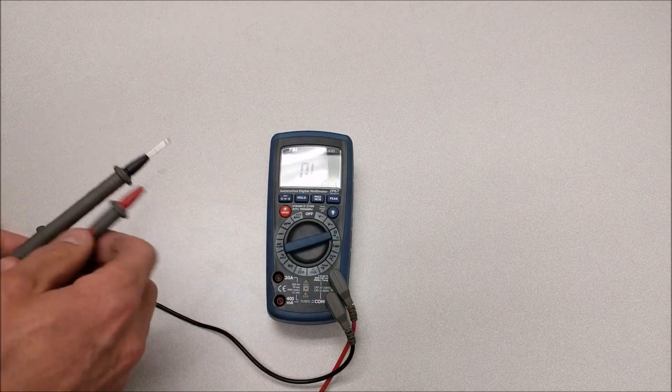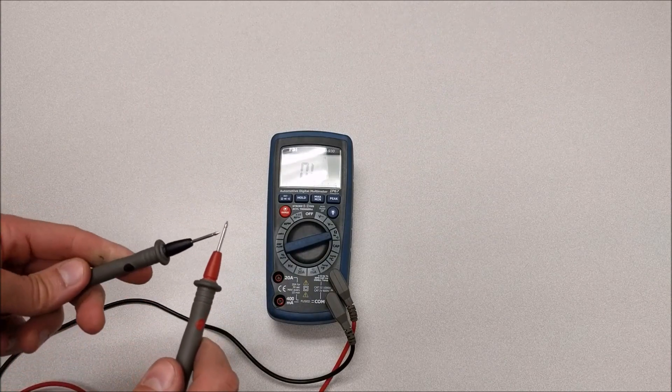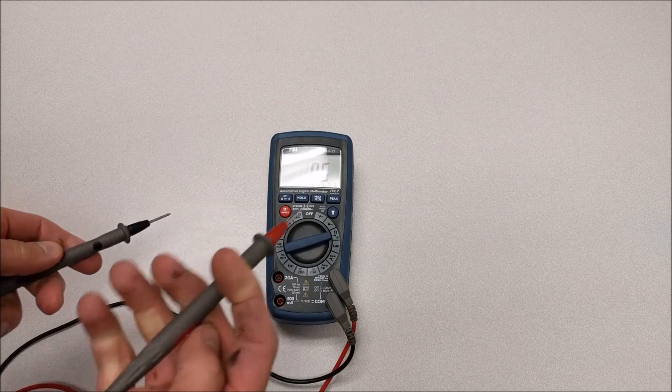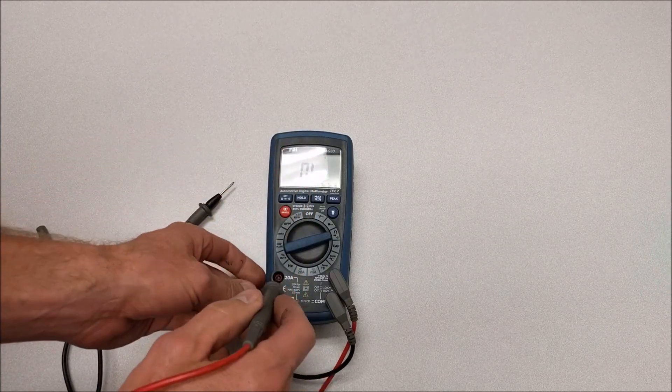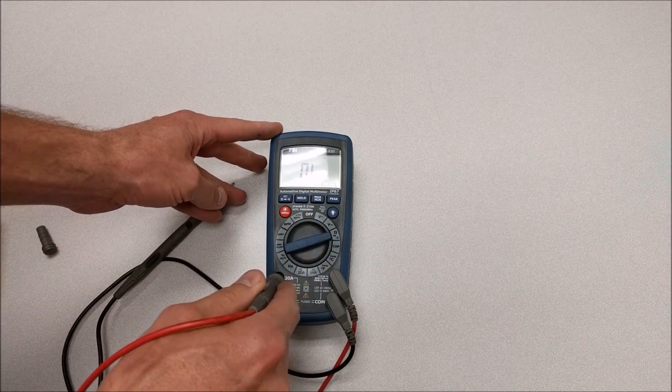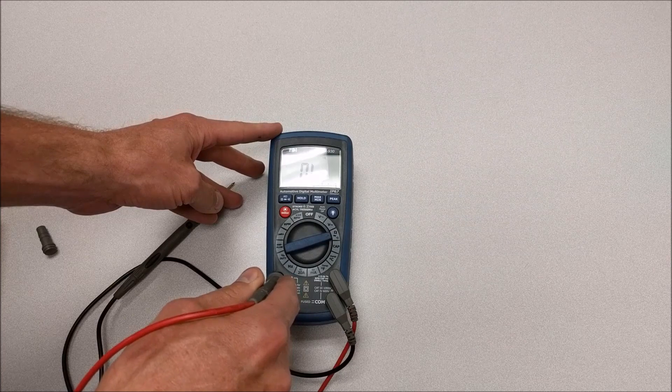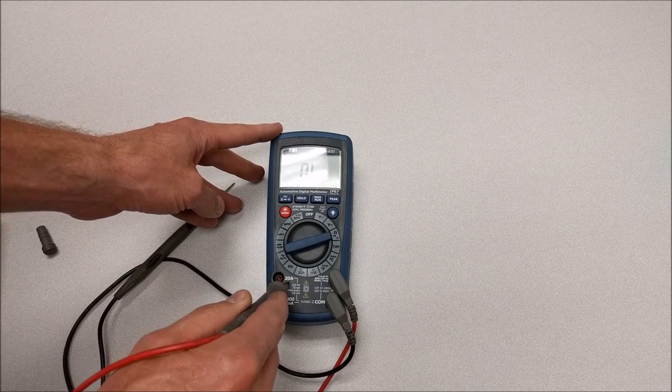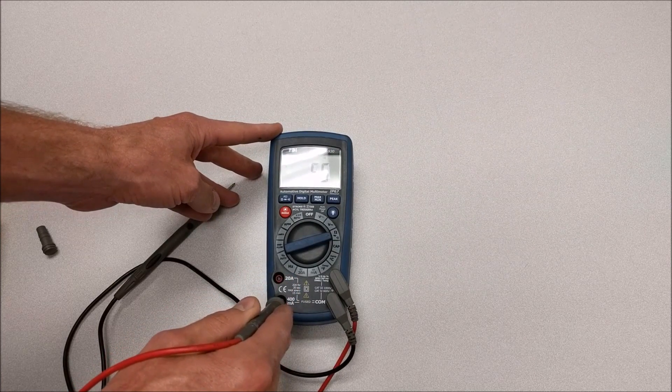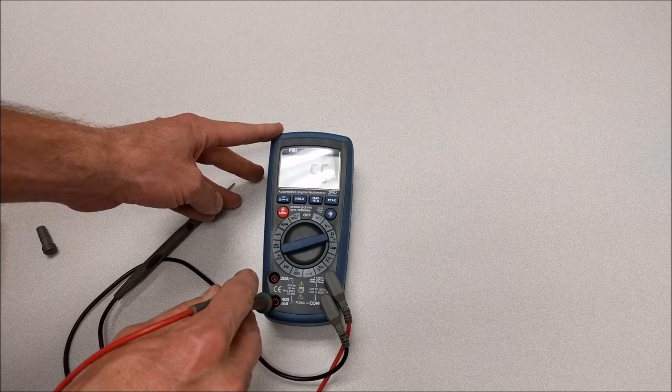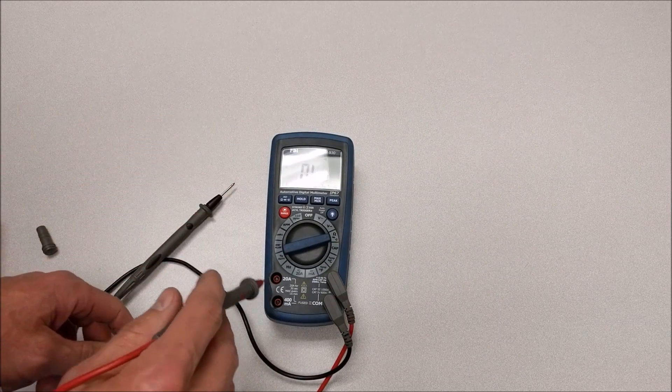I can also hit that button so that I've got the beeper. This one's not quite as loud as the other meter, but it does beep. I'll check with my red lead. I don't hear anything or see anything, so apparently the 20 amp fuse is blown. But in this case, the 400 milliamp fuse is not. That one shows continuity.